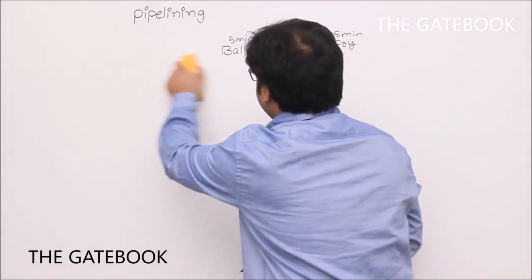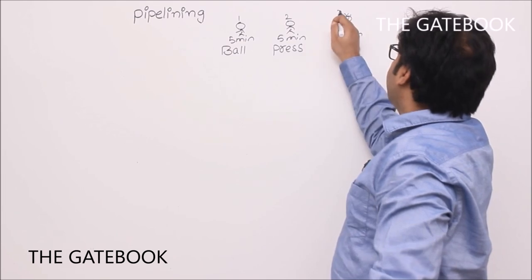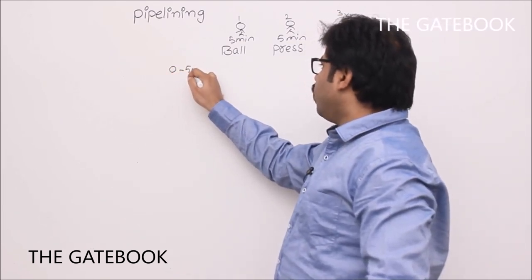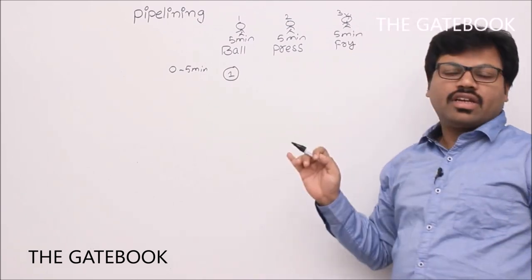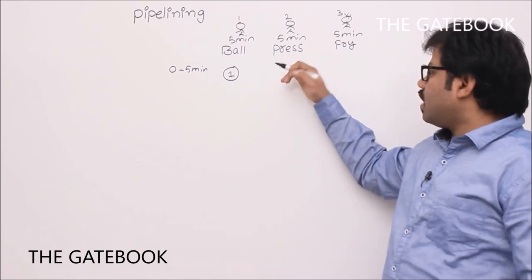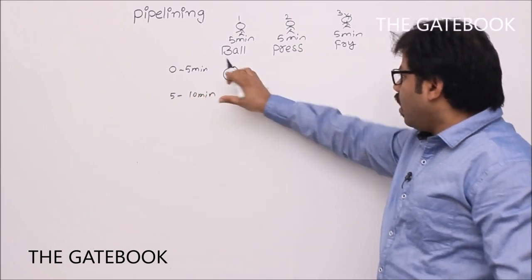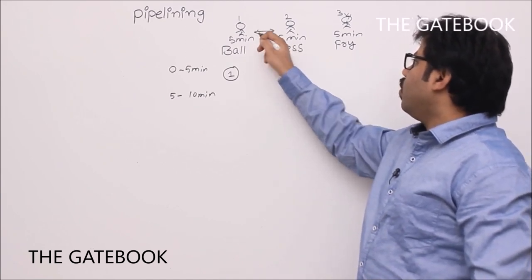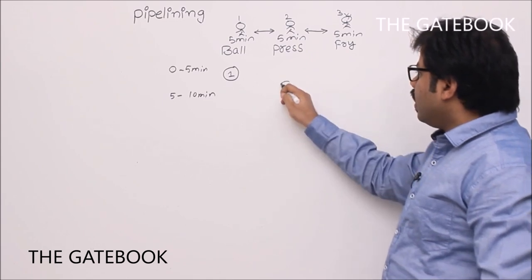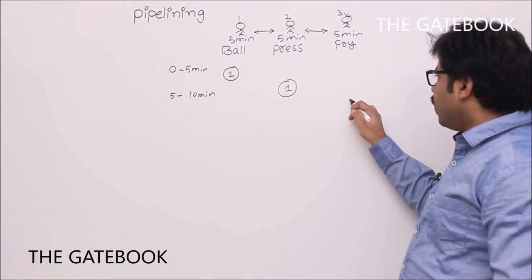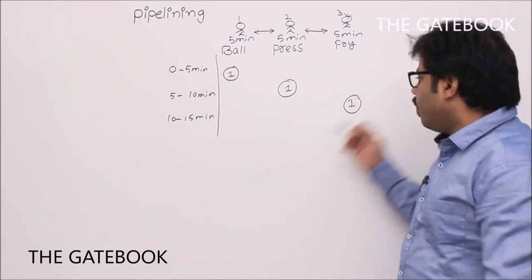Take three Rajus: Raju One, Raju Two, Raju Three. In the first zero-to-five-minute slot, Raju One makes ball number one. At that time Raju Two and Raju Three cannot work because Raju Two needs a ball to start. After five minutes, the ball is passed to Raju Two — assume zero communication delay. In the five-to-ten-minute slot, Raju Two presses the ball. In the ten-to-fifteen-minute slot, the roti will be prepared.